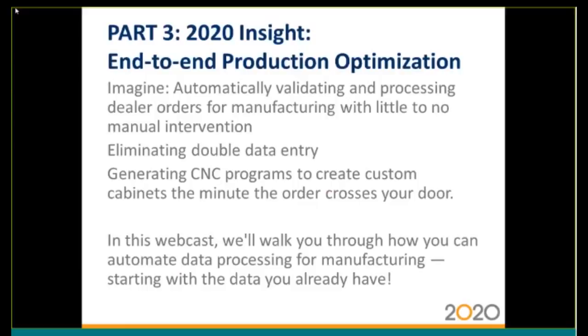Today's discussion will be end-to-end production optimization. Imagine, if you will, automatically validating and processing dealer orders for manufacturing with little or no manual intervention. Imagine eliminating double data entry. Imagine generating CNC programs to create custom cabinets the minute the order crosses your door. In this webcast, we'll talk you through how you can automate data processing for manufacturing, starting with the data you already have.